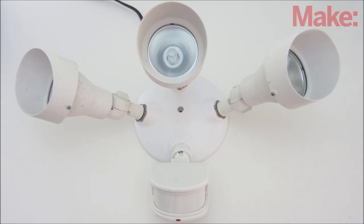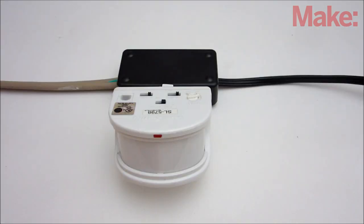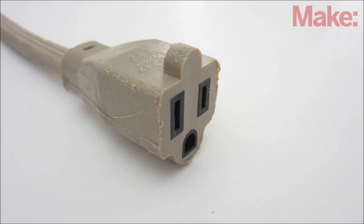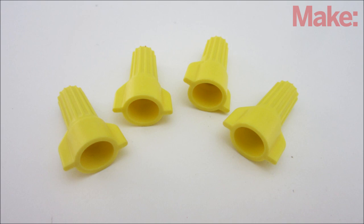For example, I had an old motion-activated security light that I turned into a motion-activated AC outlet. To do this, you'll also need a three-prong power cord with a male end, a three-prong power cord with a female end, and four insulated twist-on connectors.